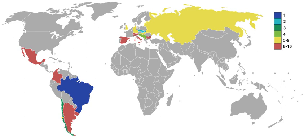South America: among the seven teams, Paraguay were drawn to play in the CONMEBOL-CCCF-NAFC Intercontinental Playoff. The remaining six teams were divided into three groups of two teams each, playing against each other on a home and away basis, with group winners qualifying. CONMEBOL Group 1: Argentina qualified. CONMEBOL Group 2: Uruguay qualified.